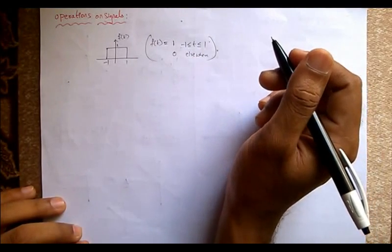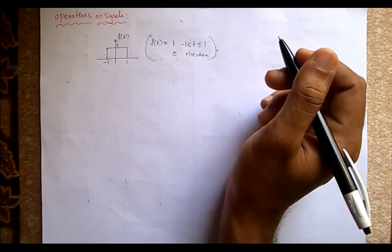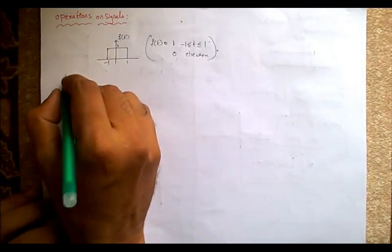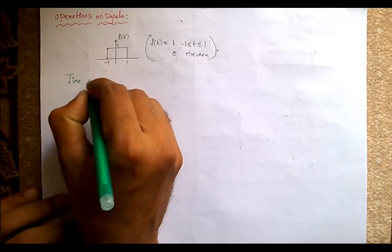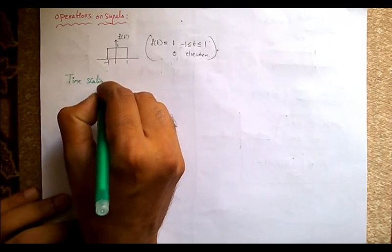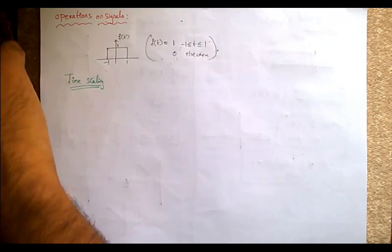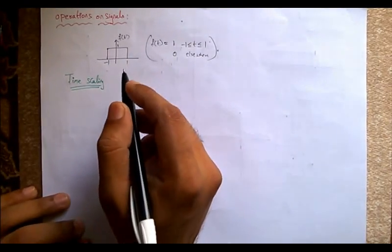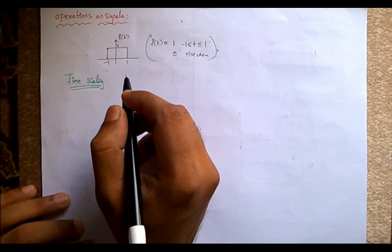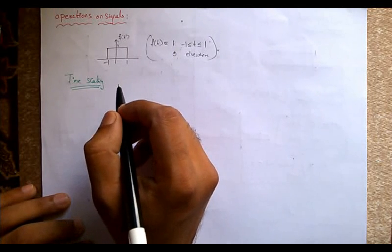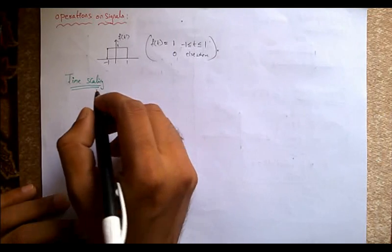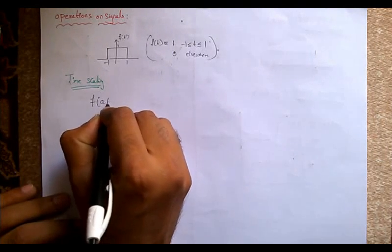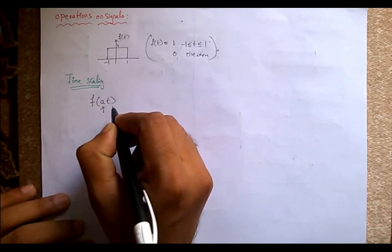Now we shall perform various operations on the signals. First, coming to time scaling. Time scaling means we multiply the argument of f of t, that is the time variable, with a constant. We represent this as f of a·t, where a is the scaling factor.